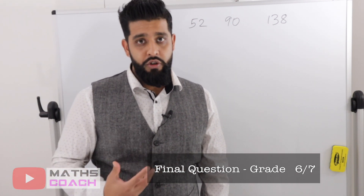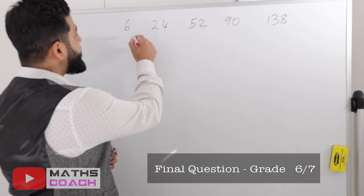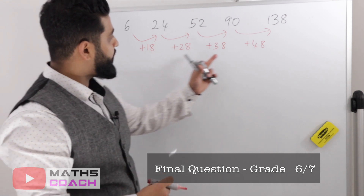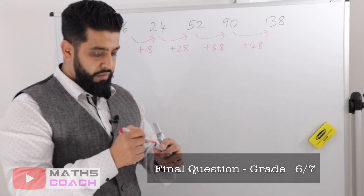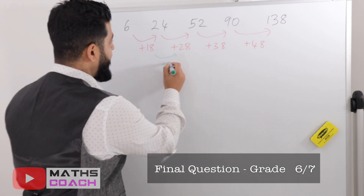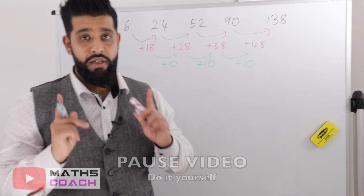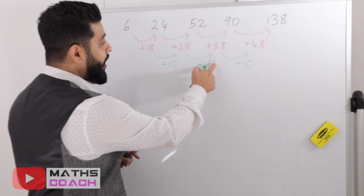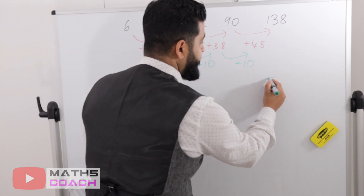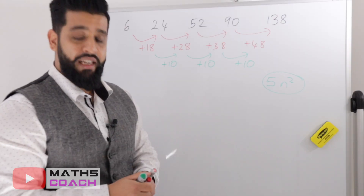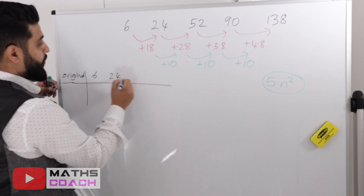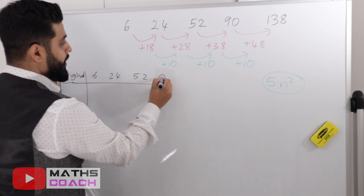On to our final example — this is around a Grade 7 for your GCSE. Find the differences between each term — here are the differences. Now find the difference of the differences: add 10, add 10, add 10. Half this difference — half of 10 is 5 — so we write 5n squared.